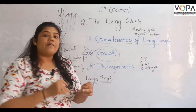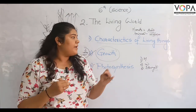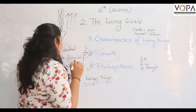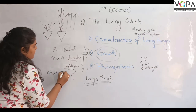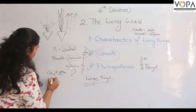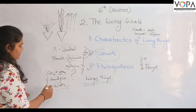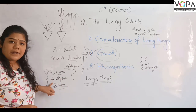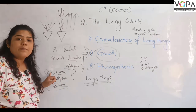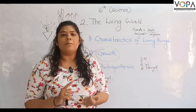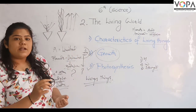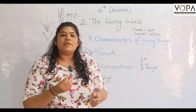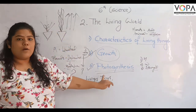Animals are heterotrophs. In terms of plants, they take in water and carbon dioxide. The plants use carbon dioxide and water, and this process produces food and occurs in the leaves — this process is called photosynthesis.